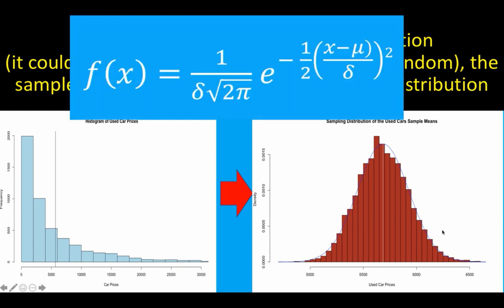And since the graph approaches the normal distribution, we know how to compute this function. In the previous video, we already talked about how we derive this function for the normal curve. And if this distribution now follows the normal distribution, then we have a function that we can use to compute mathematically the probability of seemingly random events because of this theorem, which we call the Central Limit Theorem.